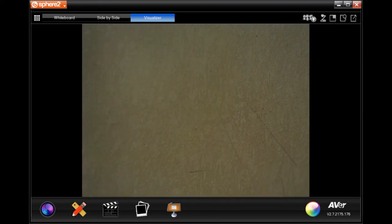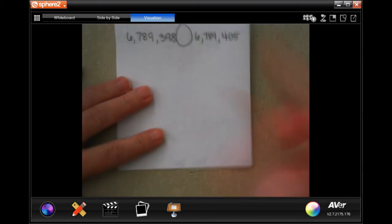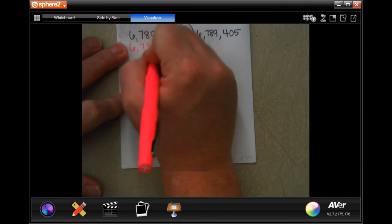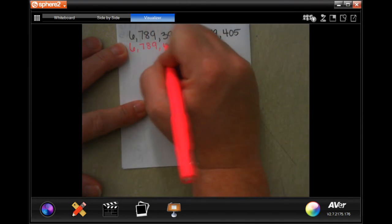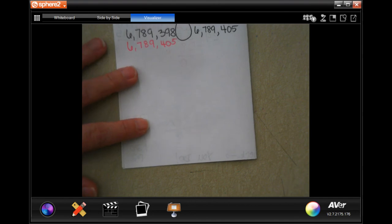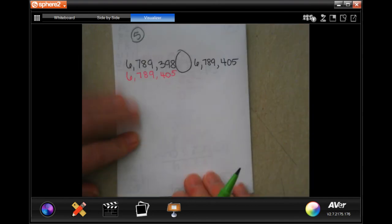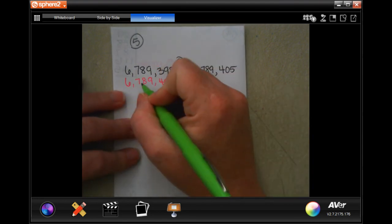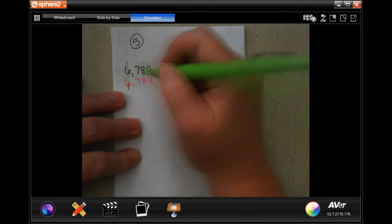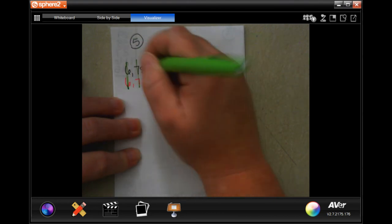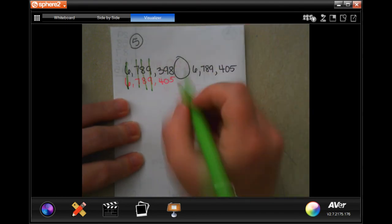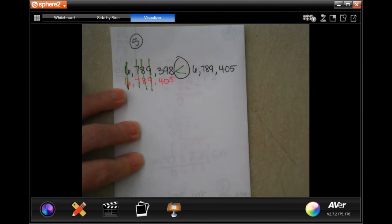Number 5. I love these because I'm going to write this number underneath this number. Now, these are really easy because you kind of treat them like ABC order, where if the letter is the same, then you just go to the next one. So, in this one, the 6s are the same. 7s are the same. 8s are the same. 9s are the same. Well, there's 3 and there's 4. That makes the 4 the bigger number, which means it opens that way.